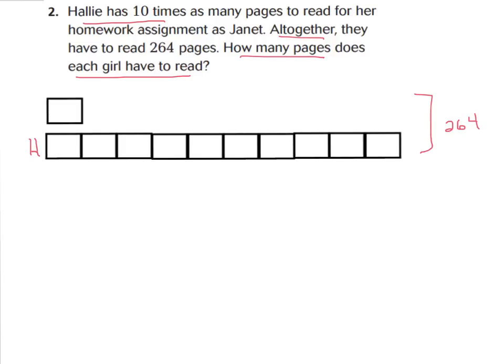So we need to make an H with 10 boxes to show Hallie. I have 1, 2, 3, 4, 5, 6, 7, 8, 9, 10 boxes for Hallie. And we're going to make one box here for Janet. And I'll put a J next to Janet's box. Now, altogether they have 264 pages. How many does each girl have to read? So our equation is going to be 264 pages divided by how many groups? Well, how many boxes do we have? Hallie has 10 and Janet has 1. So that's going to be 11 groups that we'll make. Let's go ahead and divide together to find out how many goes in each box.